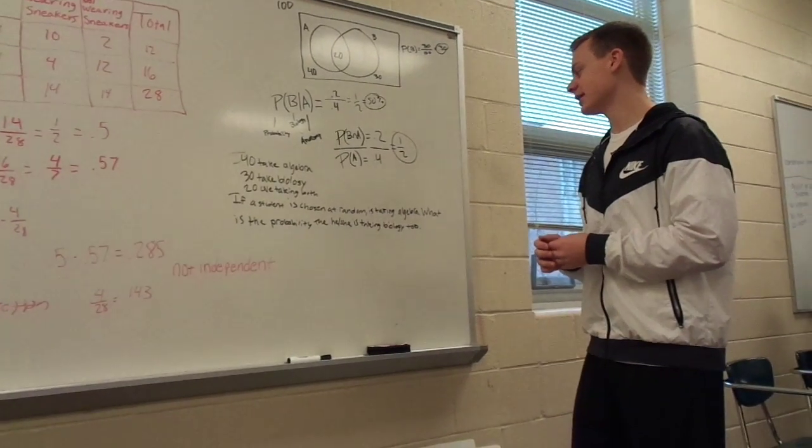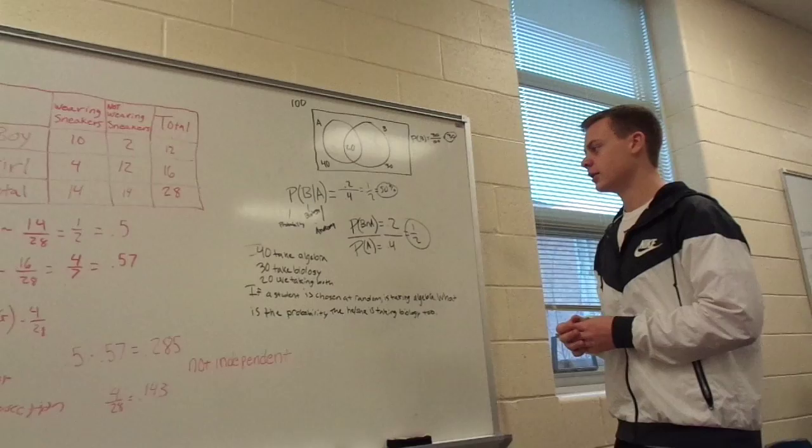At random, just taking algebra, what is the probability that he or she is taking biology too? So 40 take algebra, 30 take biology, and 20 are taking both.